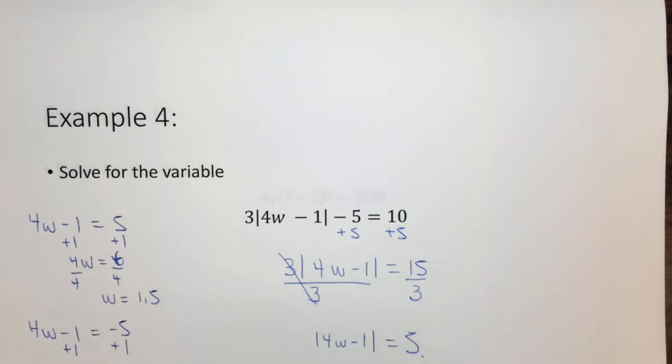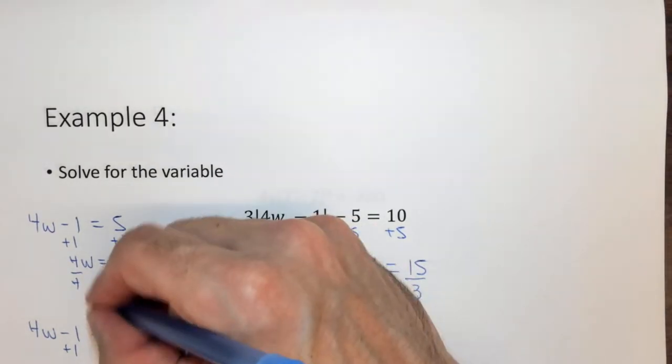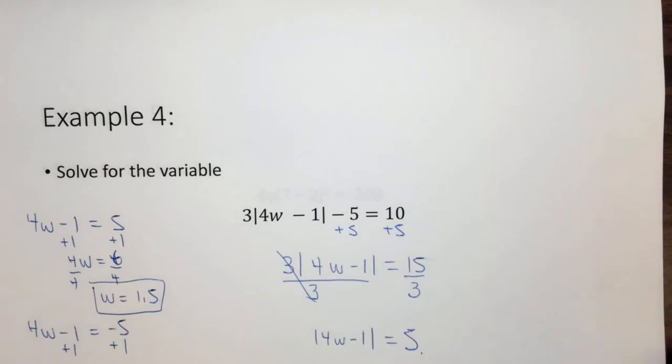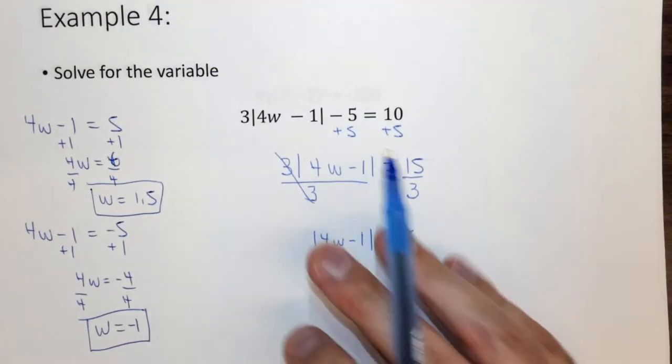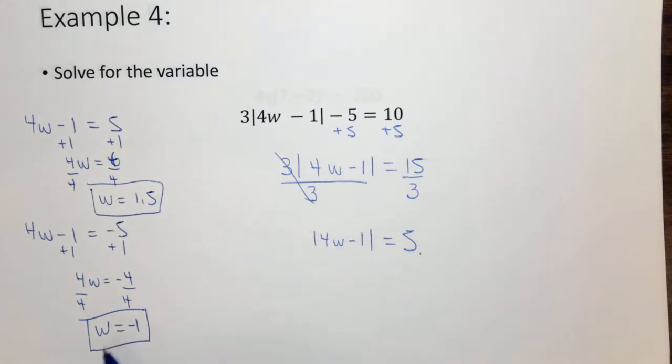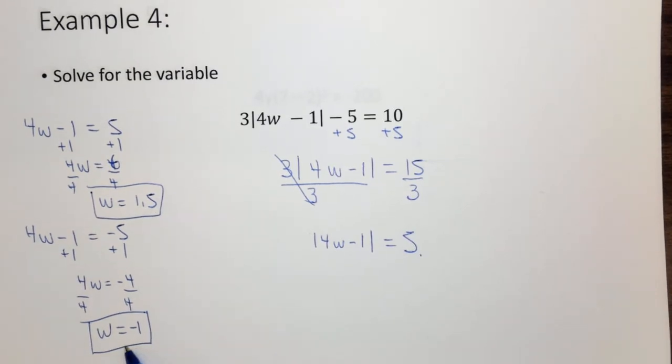So we have two possible answers for w. W could equal 1.5 or w could equal negative 1. Because it's an absolute value, we don't know if it's 1.5 or negative 1. So it could be either answer and if you plug them both in you'll get the correct value.